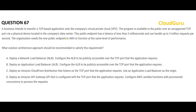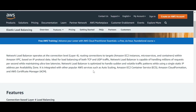Let's move to the next question. Please pause the video here to read this carefully. There is an application which a company wants to move to a Virtual Private Cloud. This application will be available to the public over unsupported TCP ports. The requirement is that it should be able to handle 3 million requests per second, and when it moves to AWS the new endpoint should handle the same 3 million requests per second.